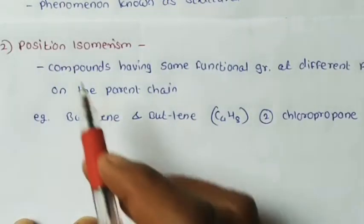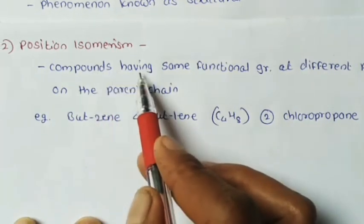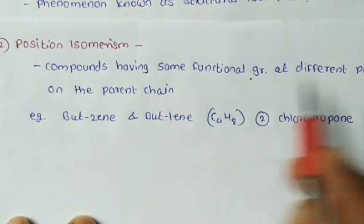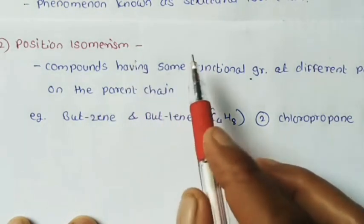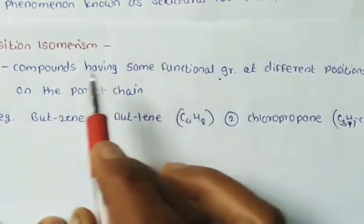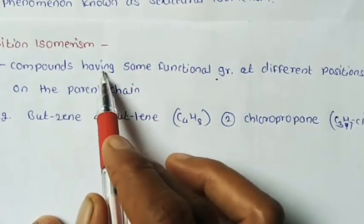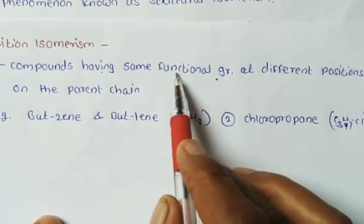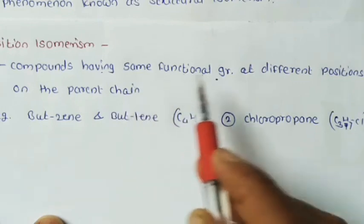Second type of structural isomerism is position isomerism. Organic compounds having the same functional group but at different positions on the parent chain are said to exhibit position isomerism. The functional group is the same but its position on the parent chain is different.